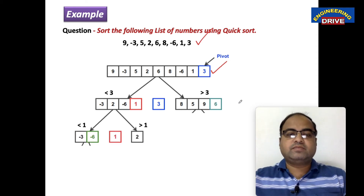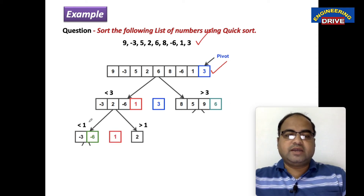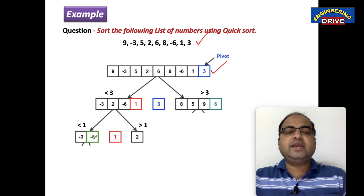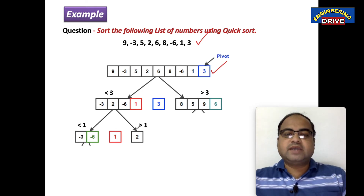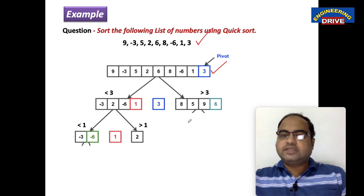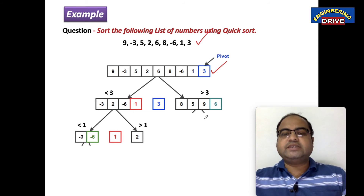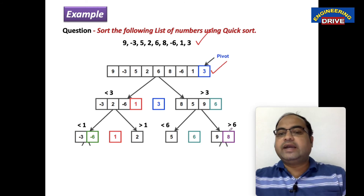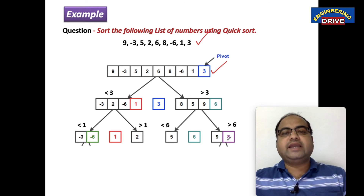So: less than 1 I got two numbers — -3 and -6. Greater than 1 I got one number — 2. The pivot is 1. Similarly from the second subarray: less than 6 I got one number — 5. Greater than 6 I got two numbers — 9 and 8.